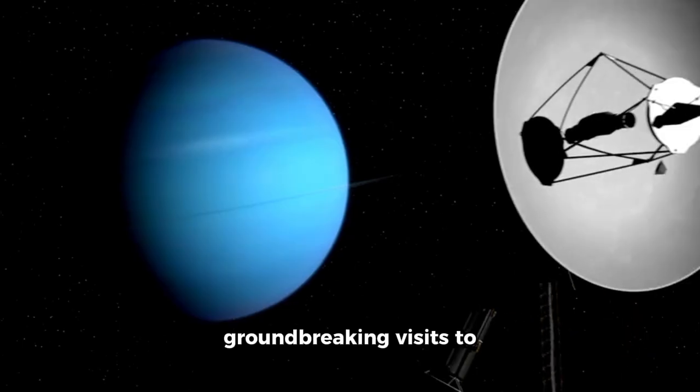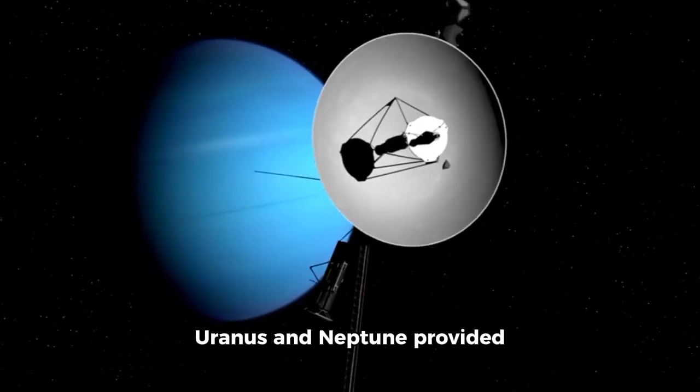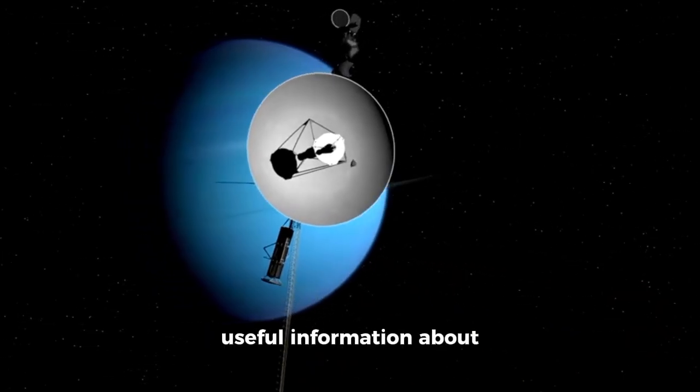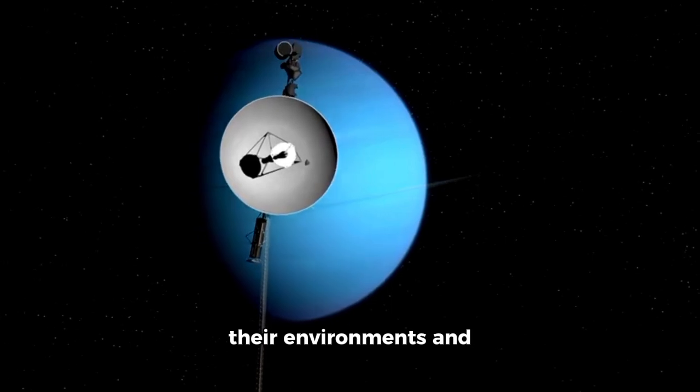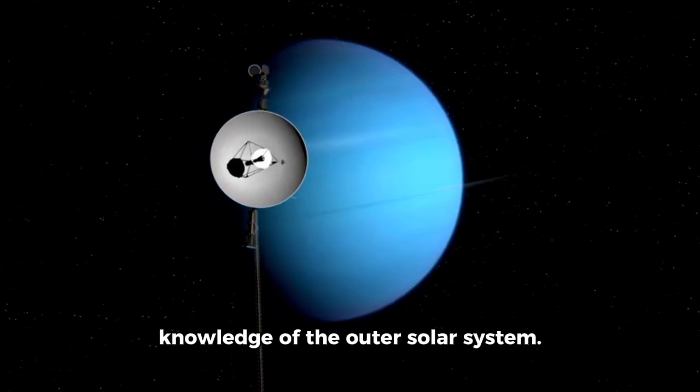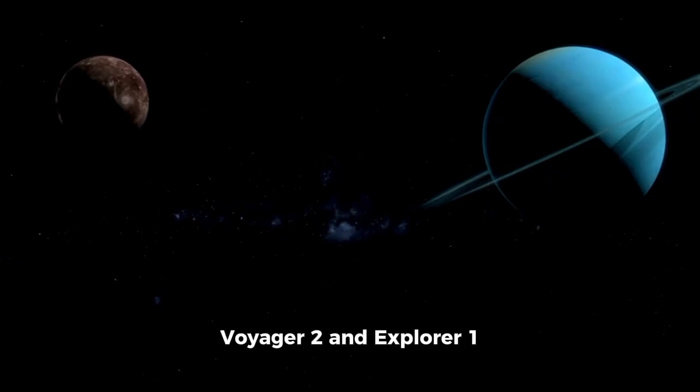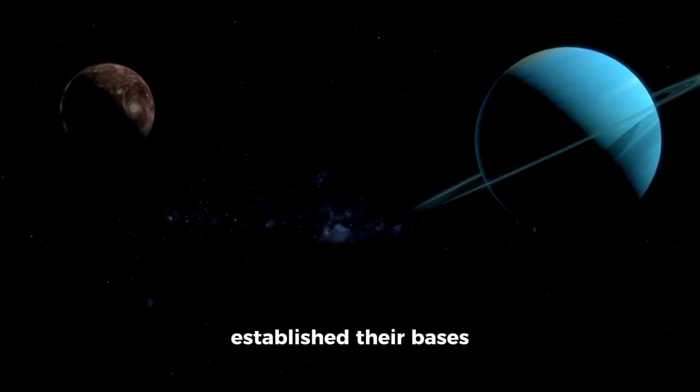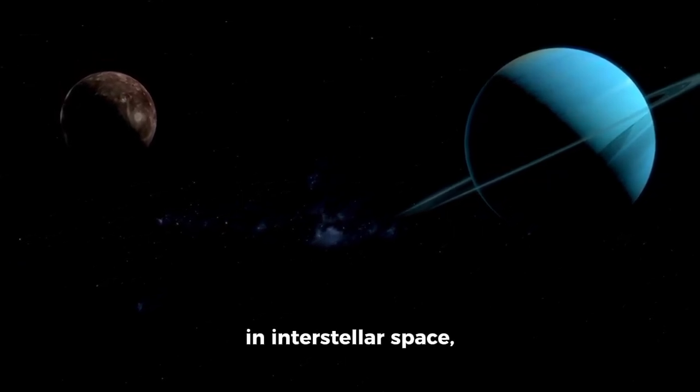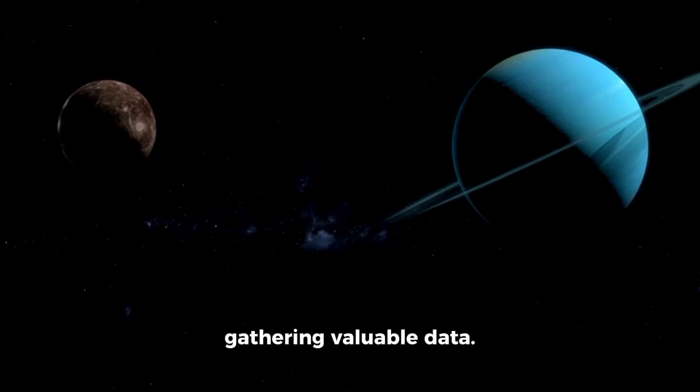The spacecraft's groundbreaking visits to Uranus and Neptune provided useful information about their environments and moons, enriching our knowledge of the outer solar system. Following their planetary missions, both Voyager 2 and Explorer 1 established their bases in interstellar space, where they keep gathering valuable data.